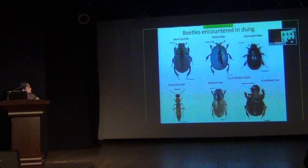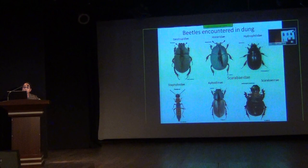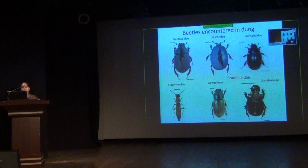Coming to Histeridae, this is commonly called the clown beetle or the hister beetle. It is a predatory beetle found in dung — it is not coprophagous; it feeds on the other beetles in the dung. Coming to Hydrophilidae, the common name is aquatic scavenger beetle, but it is not completely aquatic. Some of them are found in dung, and the larvae are predatory, feeding on other larvae found in dung.